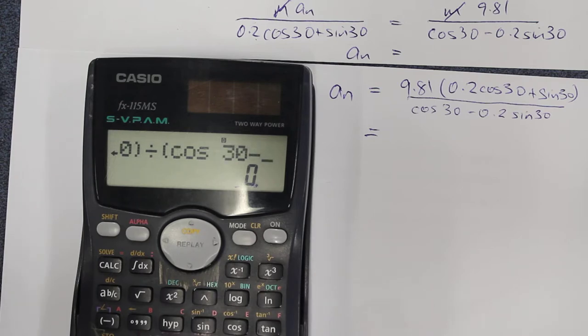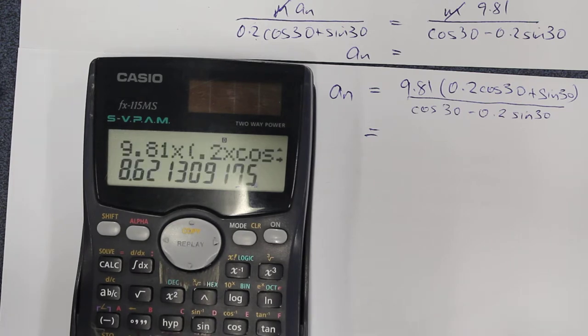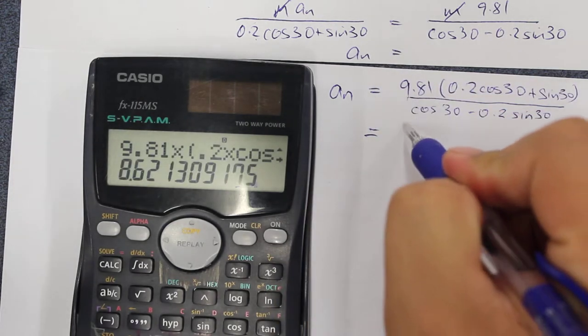That should be divided by cosine of 30 minus 0.2 times sine of 30, close bracket. Here we get an acceleration of 8.62.